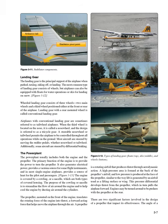Landing Gear. The landing gear is the principal support of the airplane when parked, taxiing, taking off, or landing. The most common type of landing gear consists of wheels, but airplanes can also be equipped with floats for water operations or skis for landing on snow. Wheeled landing gear consists of three wheels: two main wheels and a third wheel positioned either at the front or rear of the airplane.